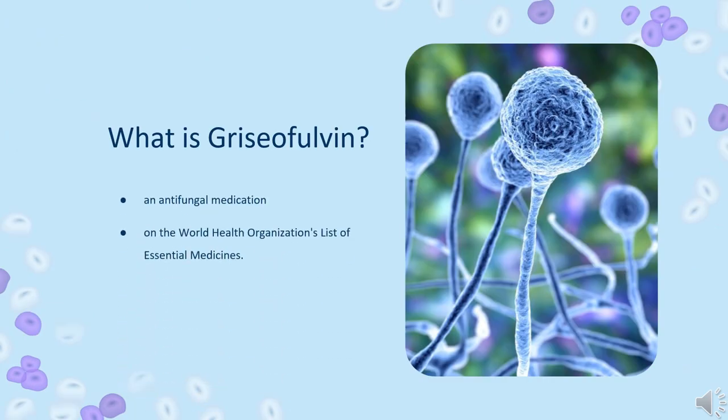Griseofulvin is an antifungal medication used to treat a number of types of dermatophytosis, including ringworm. This includes fungal infections of the nails and scalp, as well as the skin when antifungal creams have not worked. It is taken by mouth. Griseofulvin was discovered in 1939 from the soil fungus Penicillium griseofulvin. It is on the World Health Organization's list of essential medicines.